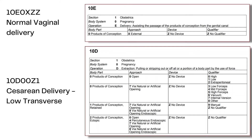C-section should always be coded to extraction as the root operation in PCS. The full code structure is: obstetrics, pregnancy, extraction, products of conception, open, no device, and depending on the type, the qualifier can be high, low, or extra-peritoneal.